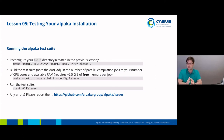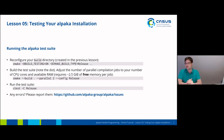If everything worked so far and the test suite compiled successfully, you can now run the test suite using the ctest command, which comes bundled with CMake. You can just run ctest with the release flag and the test cases should execute successfully. If you run into any problems with the test cases, please report them to us, as this indicates an error in ALPACA and we'd be happy to know about it.